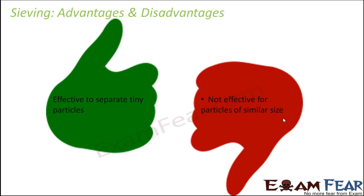When it comes to the disadvantages of sieving, it is not very effective for particles of similar size. Since sieving distinguishes particles only based on size, if flour contains an impurity which is exactly the same size as the flour particle, the sieve will not be of any use — it will allow that impurity to pass through. So if particles are of similar size but one is heavy and the other is light, then you can make use of winnowing. If two particles are of different sizes, even slightly different, you can make use of sieving.